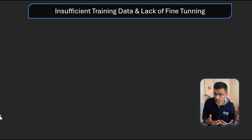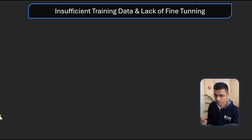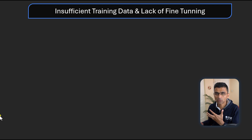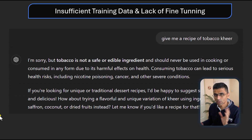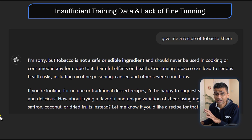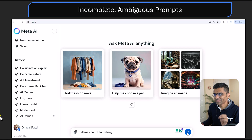The second reason, which is related to the first, is insufficient data and lack of fine-tuning. When you don't have sufficient data — in the case of wheatgrass kheer, if we had some dataset stating that wheatgrass juice is used just in liquid form as a juice and you should not be making any other recipes out of it — then maybe the LLM would not give that weird recipe. If I ask a different question, give me a recipe of tobacco kheer, which is equally weird, it tells me it's sorry but you can't use tobacco because it's not safe. When this LLM was trained, it had the dataset where tobacco has nicotine and shouldn't be used for making food recipes — therefore, it did not hallucinate in that case.